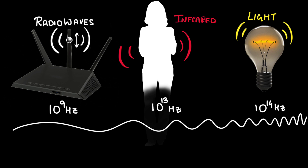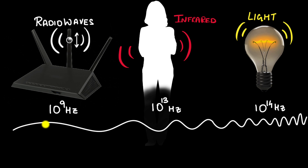Just to give you a feel for the numbers: radio waves from your wi-fi are on the order of about a billion hertz — the electrons oscillate about a billion times per second. Infrared is around 10¹³ Hz, and visible light is around 10¹⁴ Hz. You can have even higher frequencies: ultraviolet rays, X-rays, gamma rays. As frequency increases, wavelength decreases because they are inversely related.